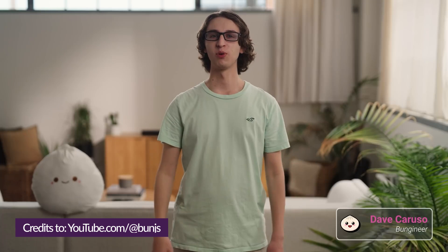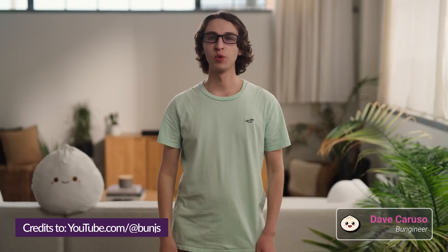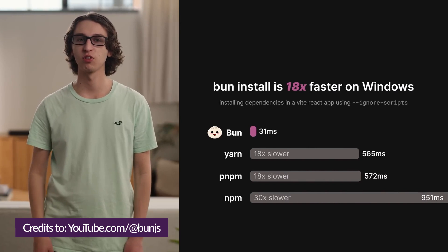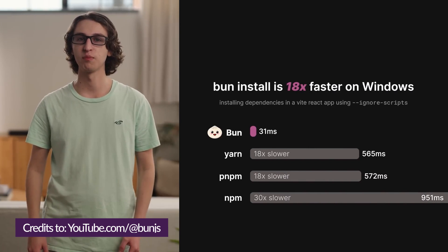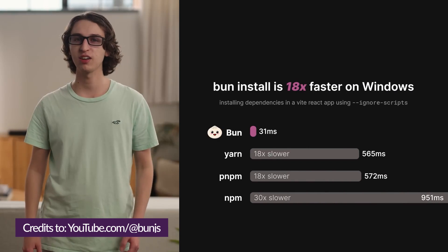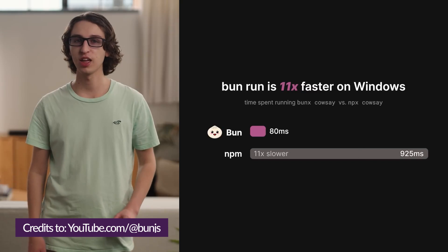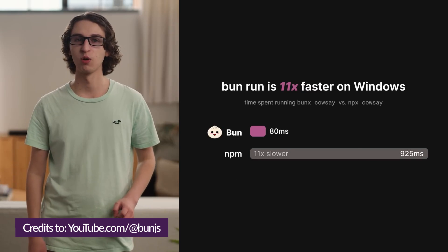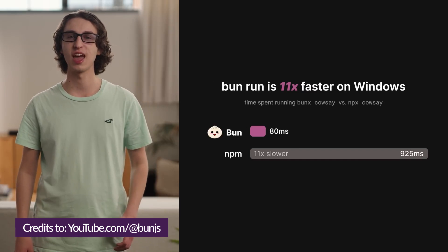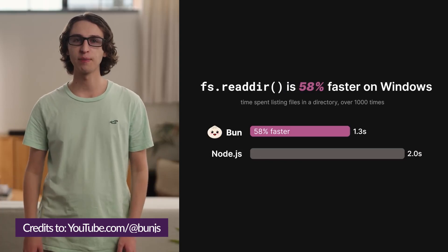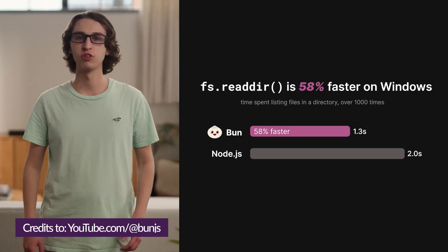The biggest new feature is that Windows support is finally here. This was previewed back with Bun 1.0, but Bun 1.1 adds support for Windows 10 and later, which is awesome. Another feature in this release is the Bun Shell, which was announced a couple of months ago — it's basically a cross-platform shell similar to Bash, but it also works on Windows. There are lots of other improvements and features too, so check out the Bun website and their GitHub repo for more info.